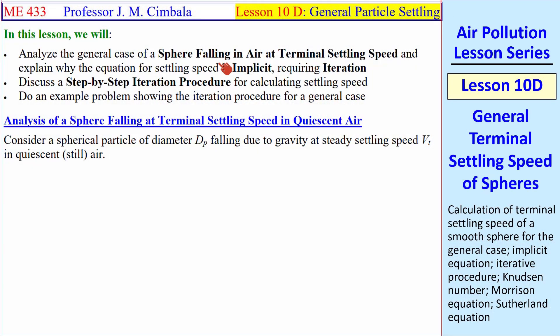In this lesson, we analyze the general case of a sphere falling in air at terminal settling speed. We'll find that the equation for the settling speed is implicit, requiring iteration, and I'll show you a recommended iteration procedure and do an example problem to demonstrate this procedure.